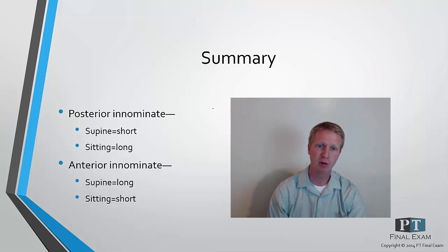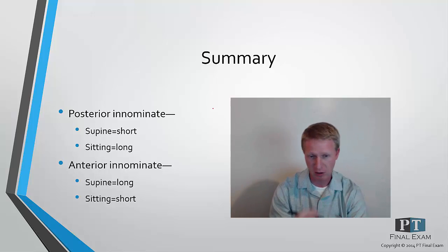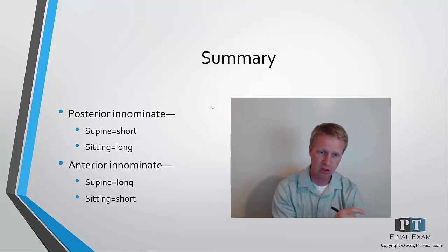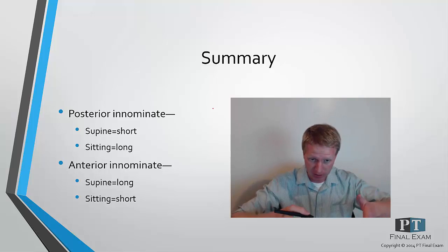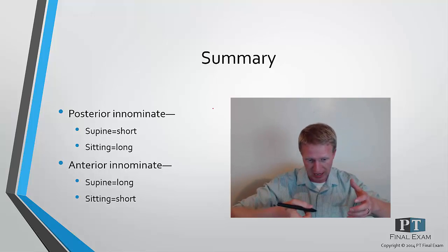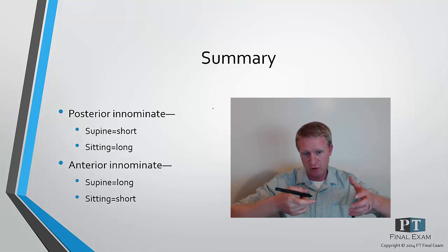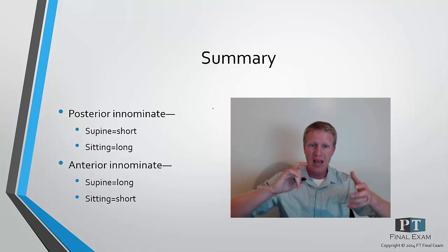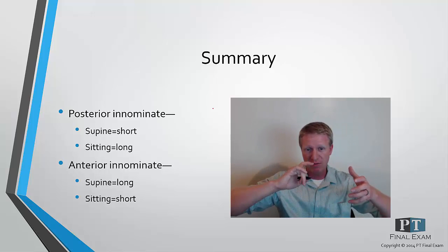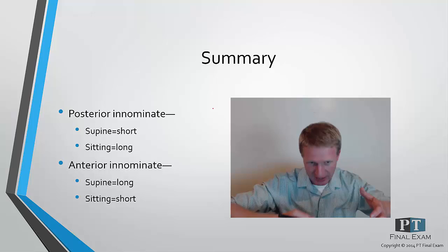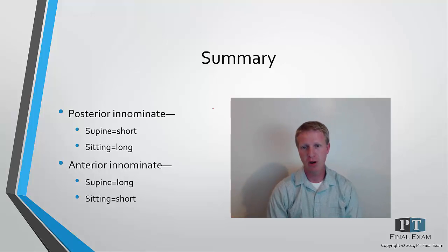Quick summary: with a posterior innominate it will be shorter in supine and longer in sitting; the converse is true for an anterior innominate — longer in supine and shorter in sitting. For treatment: anterior innominate, use the hamstrings to pull it into posterior rotation; posterior innominate, use the rectus femoris or hip flexors to pull it into anterior rotation.